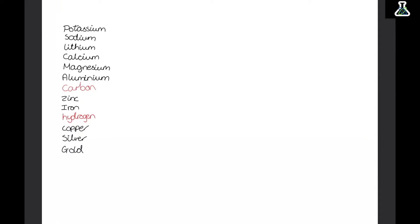We have the reactivity series of metals, and this orders metals from the most reactive to the least reactive. So we start with metals like potassium and sodium which are really reactive, and then we go down to metals like silver and gold which aren't.